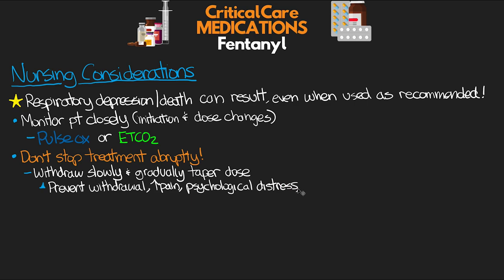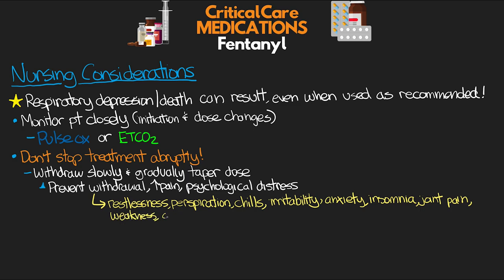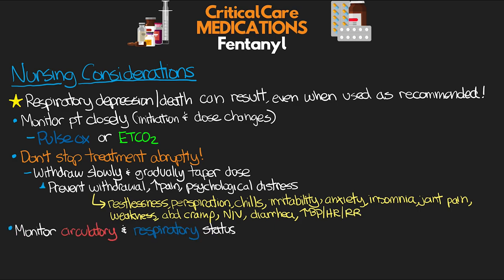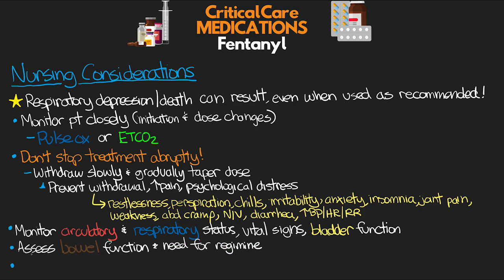Signs and symptoms of opioid withdrawal include restlessness, perspiration, chills, irritability, anxiety, insomnia, joint pain, weakness, abdominal cramping, nausea, vomiting, diarrhea, increased blood pressure, heart rate, and increased respiratory rate. Monitor circulatory and respiratory status as well as urinary function, and frequently assess vital signs and bladder function. High doses and prolonged use may lead to constipation, so assess bowel function and consider a bowel care regimen. Ensure naloxone and Narcan are available for signs of intentional or accidental overdose.